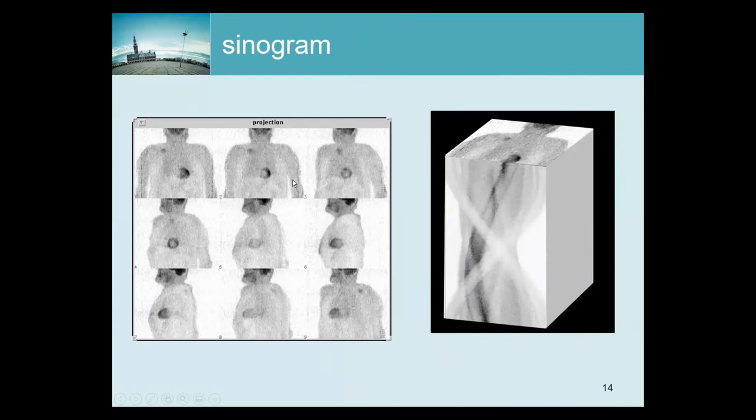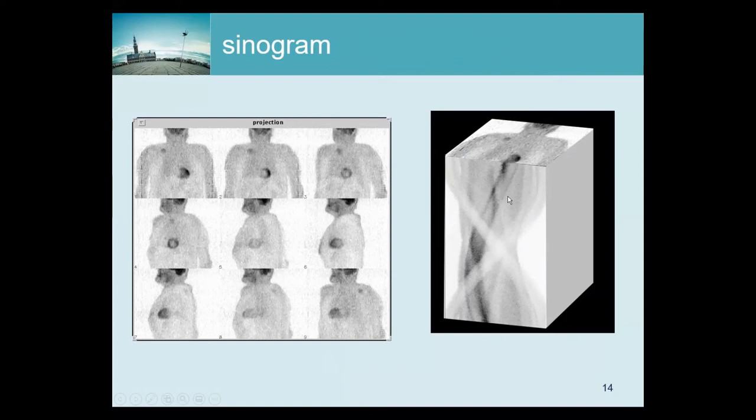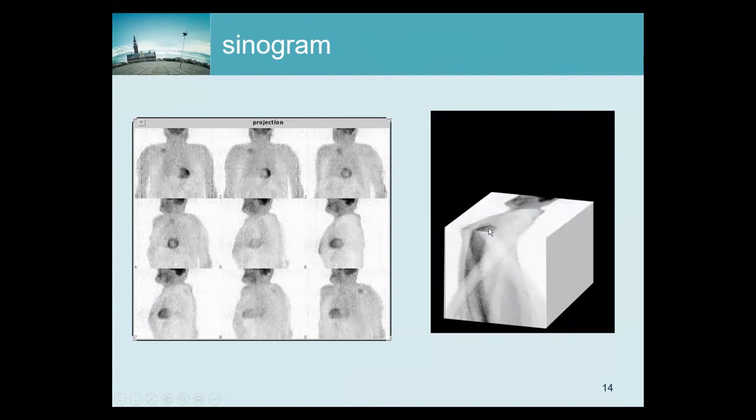So if you have a set of parallel beam projections, then basically you have a three-dimensional block of data. If you cut it in one way, then you get projections. Then you get this. And if you cut it the other way, you get sinograms. So here you see the trace of the heart going down here.